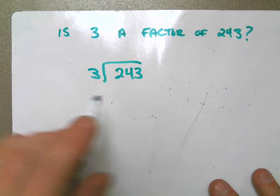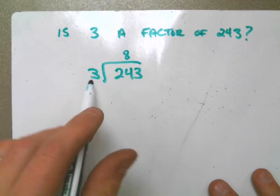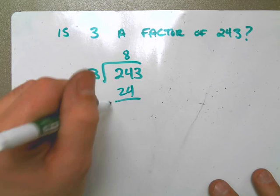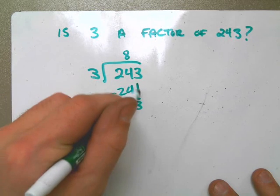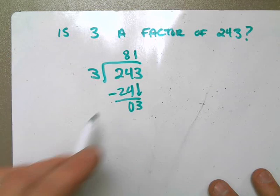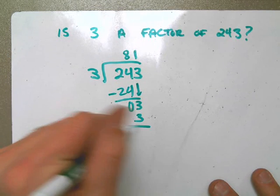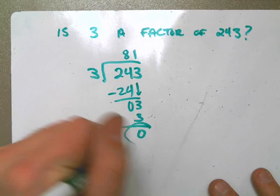And you would say, well, 3 goes into 24 eight times. 8 times 3 is 24. I subtract the 2, I drop the 0, I drop the 3 down. 3 goes into 3 once. 1 times 3 is 3. 3 minus 3 is 0.